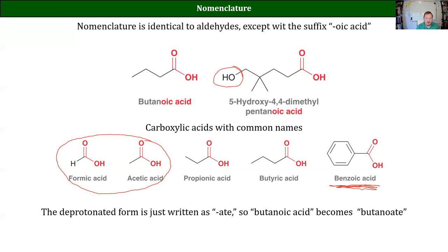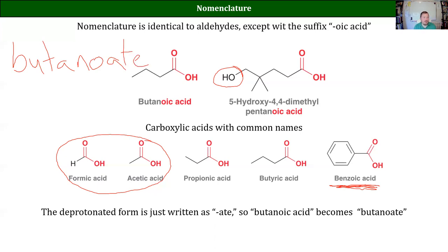If we have a deprotonated acid — one that has already given up its proton — we just drop the -ic and -acid and replace it with -ate. So acetic acid becomes acetate, butanoic acid becomes butanoate. This follows our nomenclature for naming acids from Gen Chem: anything ending in -ate gets turned into -ic acid. Nitrate became nitric acid, sulfate became sulfuric acid, phosphate became phosphoric acid. We're doing the same thing here. So formic acid becomes formate.